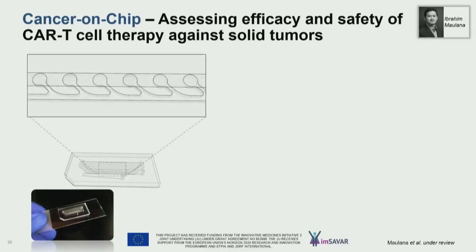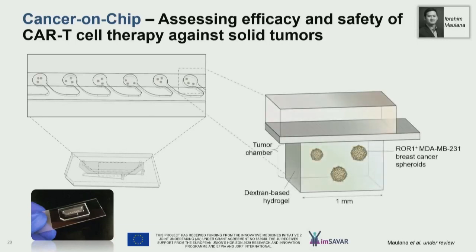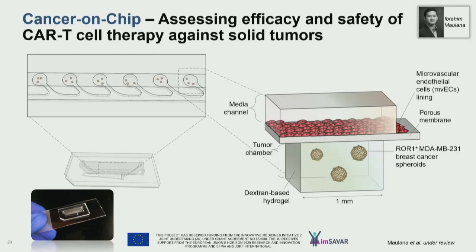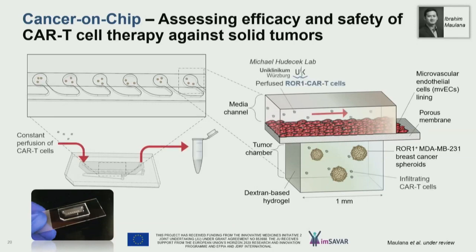This is a multi-layer system. You have in the lower compartment two chambers, then a membrane, and then the channel. We can inject breast cancer spheroids — and now we're also working on tumor organoids — into the lower compartment. We can line the membrane with an endothelium layer, and then perfuse T cells or CAR T cells — here we use ROR1 CAR T cells from our collaborators in Würzburg — through the top compartment and look at a number of different endpoints.